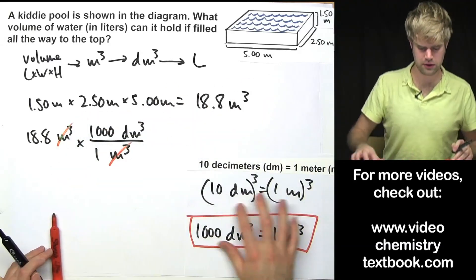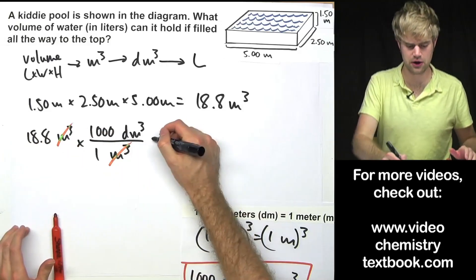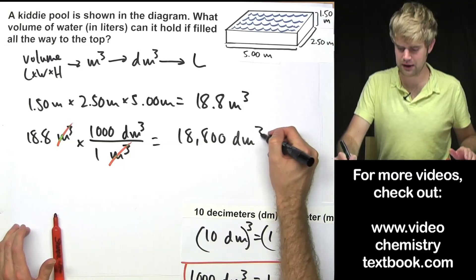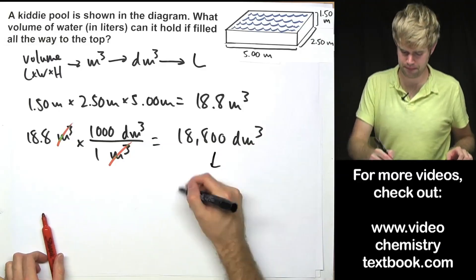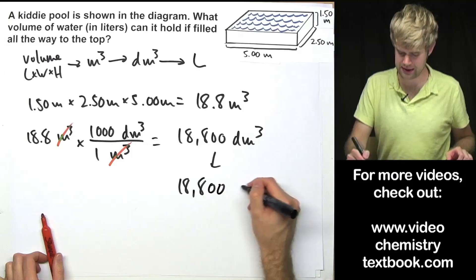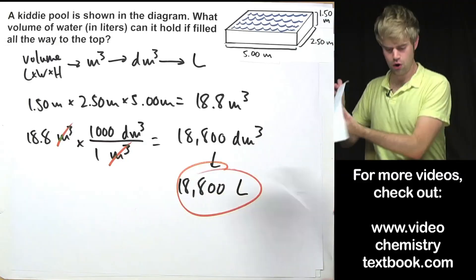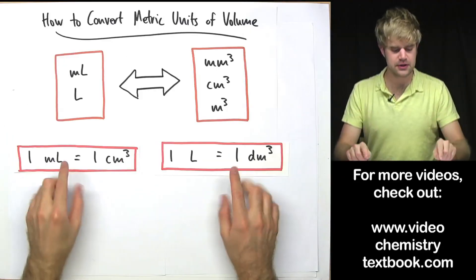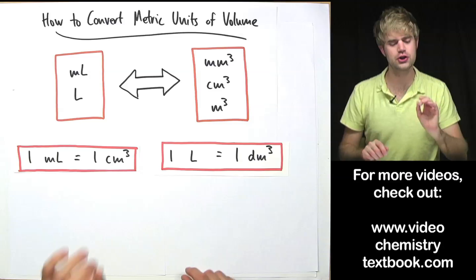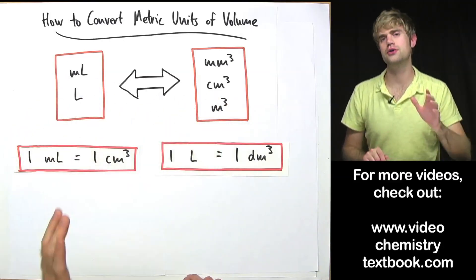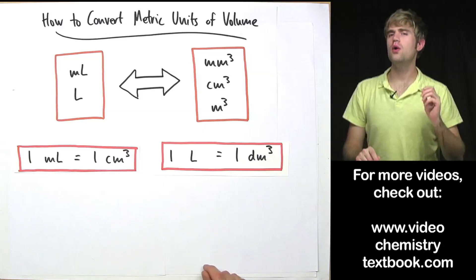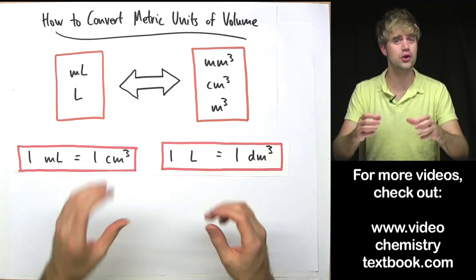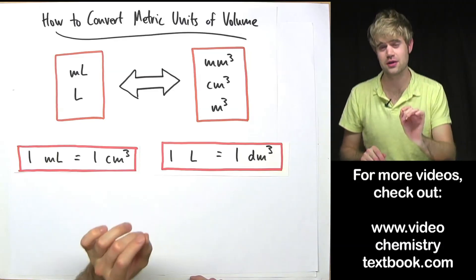Meters cancel out and I'm left with decimeters here. Multiply through and I get 18,800 cubic decimeters and as we said before those are the same thing as liters so you can just rewrite the answer or you can do this whole long conversion factor thing if you have to be super, super, super precise. Keeping these two relationships in mind will let you really easily convert between these two categories of metric volume units. But you know what? You probably won't only have questions that give you rectangular objects where you can find the volume by just doing length times width times height.